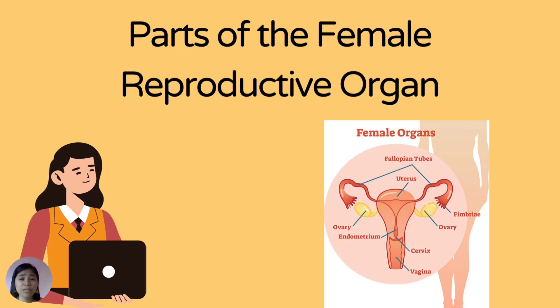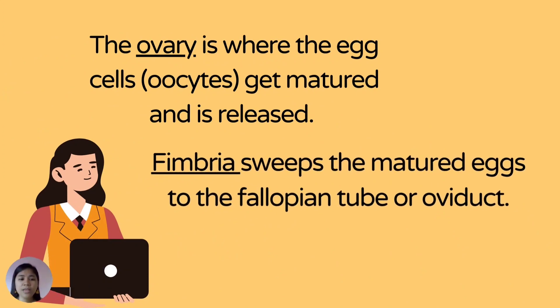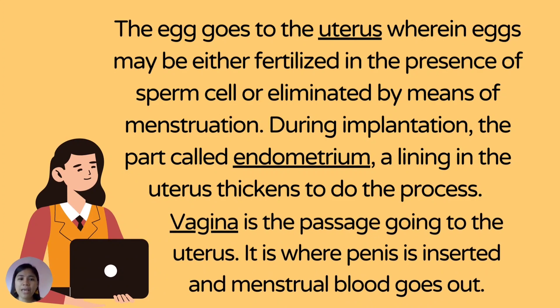The female reproductive organ is primarily responsible for the production, maintenance, implantation, and elimination of egg cells. The ovary is where egg cells (oocytes) mature and are released. Fimbria sweeps the matured eggs to the fallopian tube or oviduct. The egg goes to the uterus where it may be fertilized in the presence of sperm or eliminated by menstruation. During implantation, the endometrium lining in the uterus thickens. Vagina is the passage going to the uterus — it is where the penis is inserted and menstrual blood goes out.